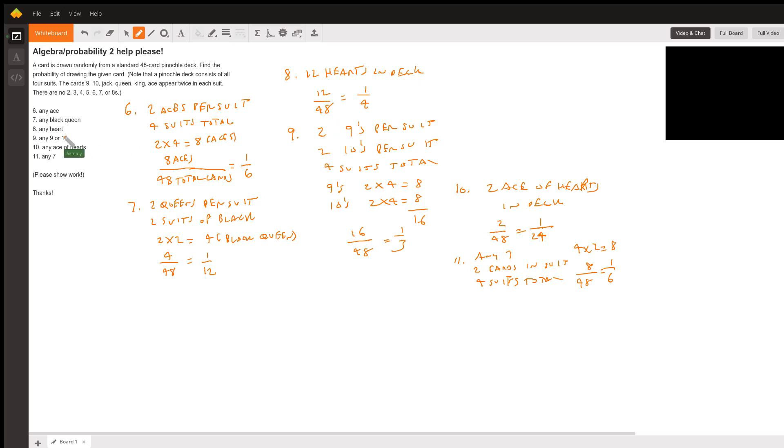Number 9: any 9 or 10. For 9, there are two in the suit and we have four suits, so it'd be 4 times 2 equals 8. And then 10, there are two in each suit and there are four suits, so it's 2 times 4 equals 8 for the tens. So nines have eight cards and tens have eight cards, so you're going to get a total of 16 cards divided by a total of 48 cards. Probability is one-third for number 9.